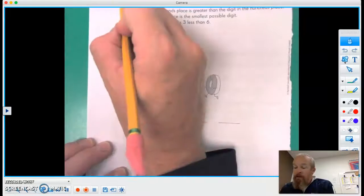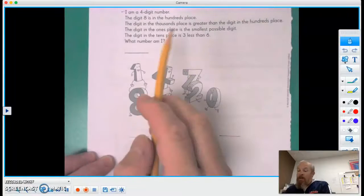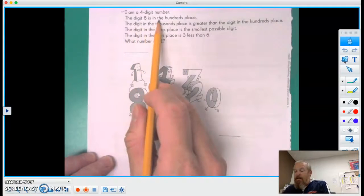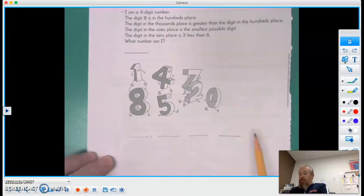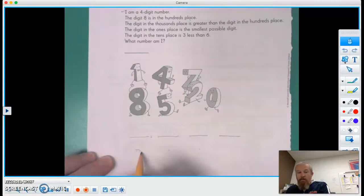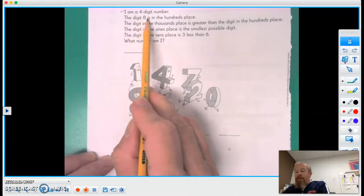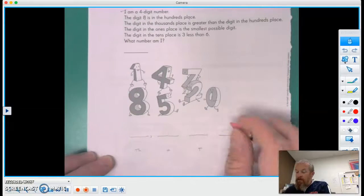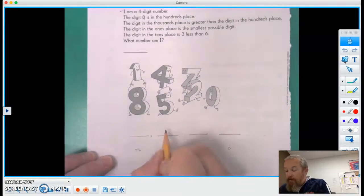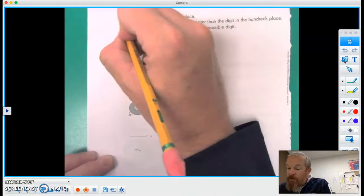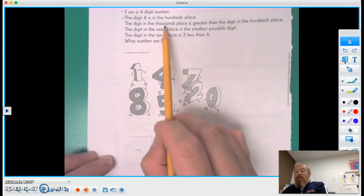So we got that clue done. Let's go down to the next one. The digit eight is in the hundreds place. So let's see, we have thousands, hundreds, tens, ones. The digit eight is in hundreds place, so this here is the hundreds place, so we have an eight here. Okay, check.